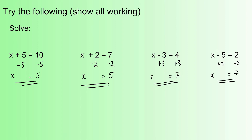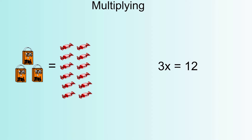Now, there are various methods we can use to solve equations — cover-up methods work for simple equations like this, but they're not really going to help with the more complex equations you'll come across later on. What you're looking for is a system, a process that works. So that's the first type of one-step equations. Let's have a look at what happens when you're multiplying. We've got a pictorial representation again: 3x equals 12, where x is an unknown quantity, so we've got three bags equalling 12 sweets.